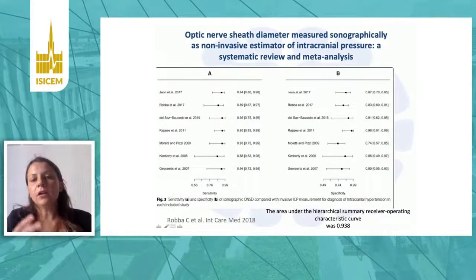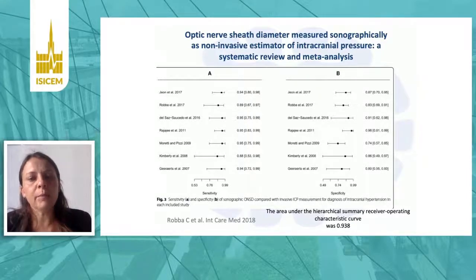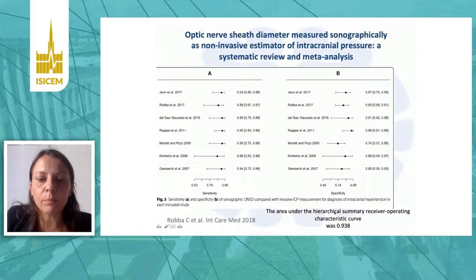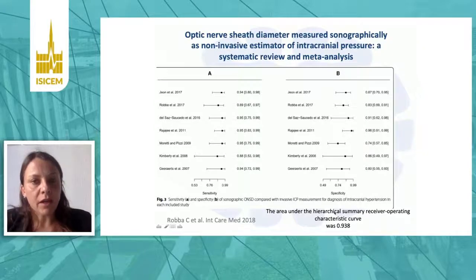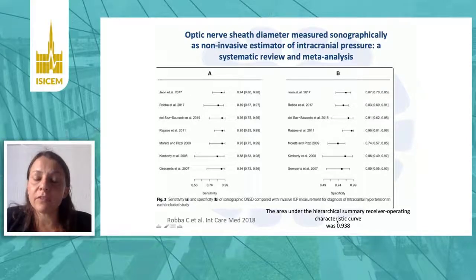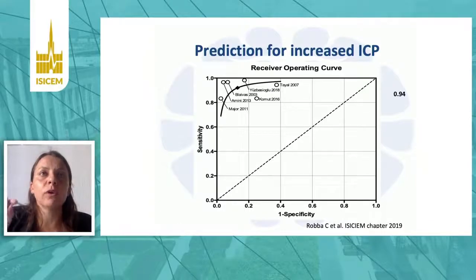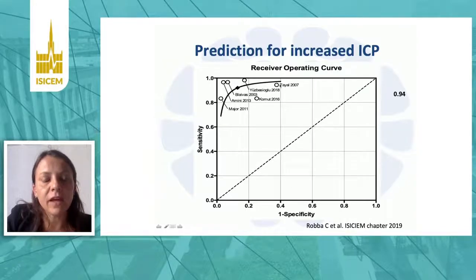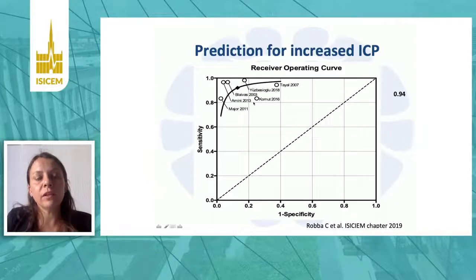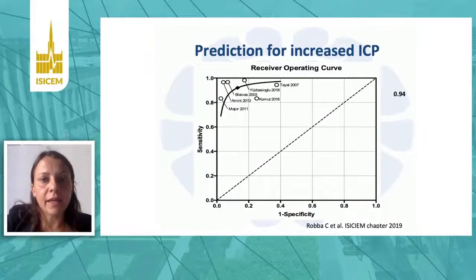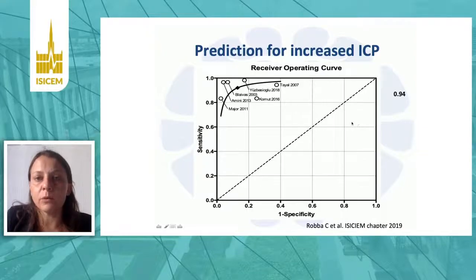Does it work? Many authors have studied the correlation between ONSD and ICP. We performed a meta-analysis a few years ago and found that the area under the curve for ONSD in assessing ICP is very high. The concept is that it's probably not exact enough to measure ICP as a specific number, but it is very good at assessing whether the patient has elevated ICP or not. Another meta-analysis including only emergency department studies confirmed the area under the curve was very good, suggesting this is an important tool especially in the ED.